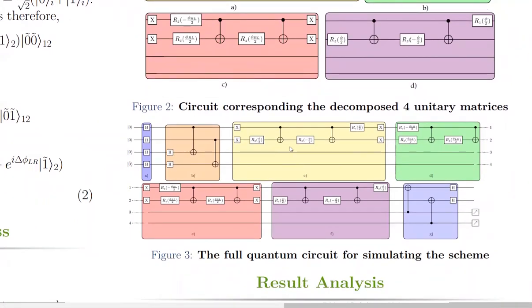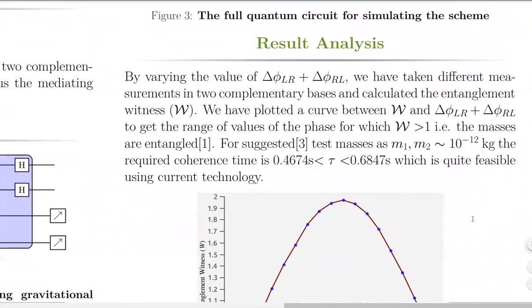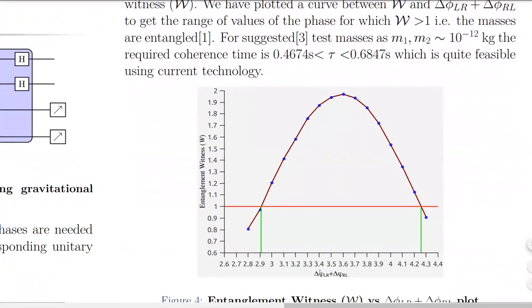We have created the entanglement between the mass and spin. Then we have created entanglement between the masses. Then we have de-entangled the mass and the spin and measured only the spin. This graph shows the entanglement witness versus the relative phase. If it is greater than one, that would mean that the two masses are entangled.